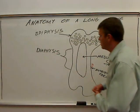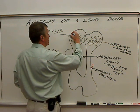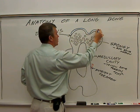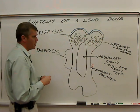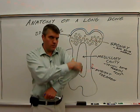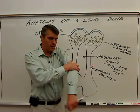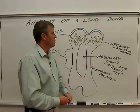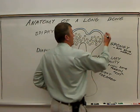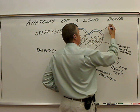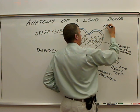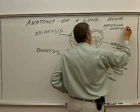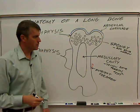At the ends of the long bone there is going to be cartilage. This cartilage is at the end of the long bones so that where the bones come together and make joints, we have good cartilage which helps the joint move more smoothly. This cartilage is called articular cartilage.